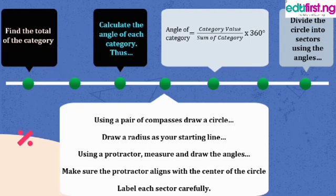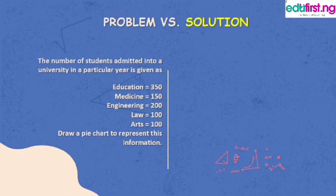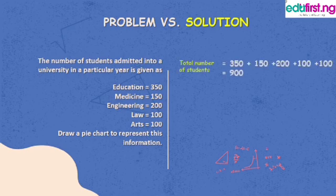We've already gotten the angles in the previous step. Using a pair of compasses, draw a circle of any radius you'd like. Then draw a radius as a starting line. Using a protractor, measure and draw the angles in proportionate form. Make sure your protractor aligns with the center of the circle carefully.